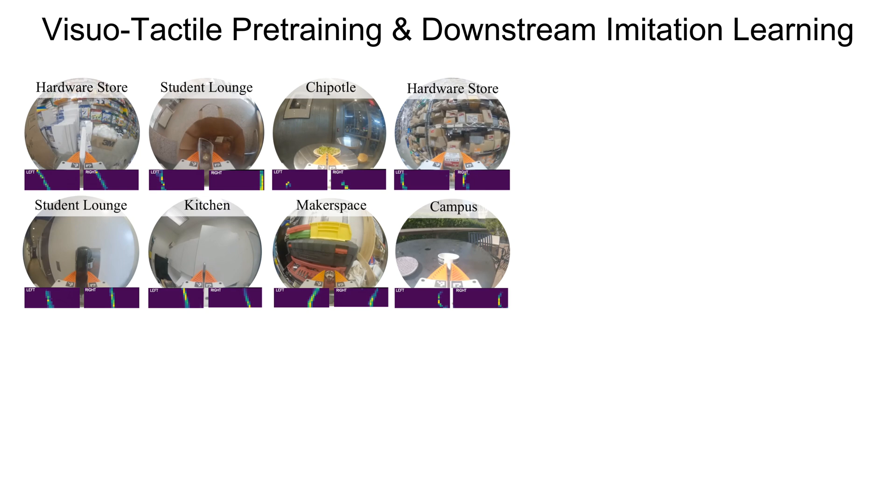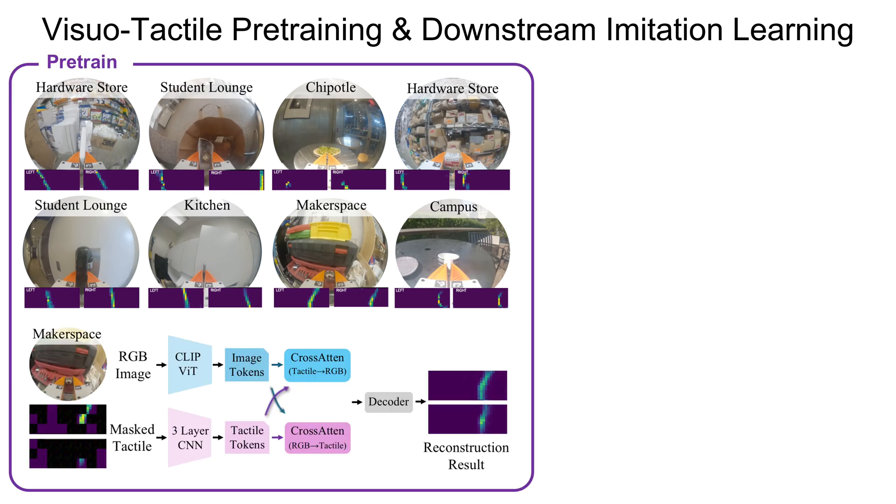To leverage our visual tactile dataset, we adopt a two-stage learning pipeline. In the first stage, we pre-train a visual tactile encoder via masked tactile reconstruction, given a partially masked tactile input and its paired image. The encoder uses cross-attention to recover the missing tactile information and learn aligned representations of both modalities.